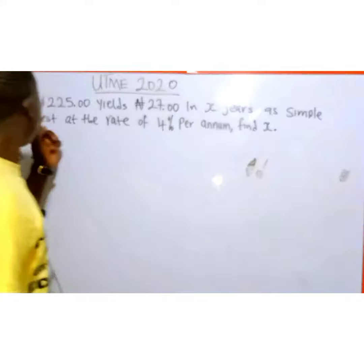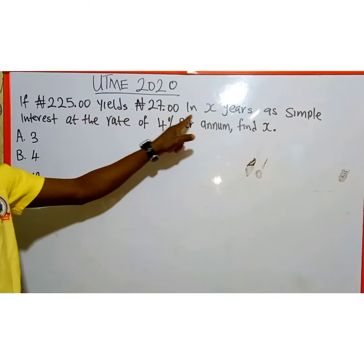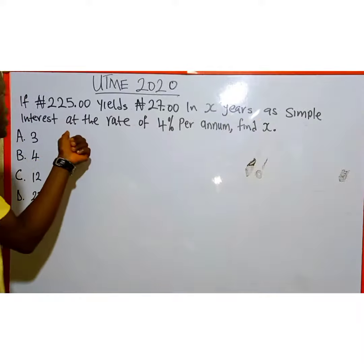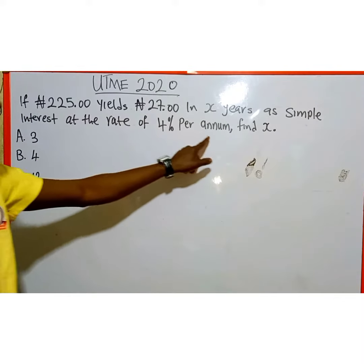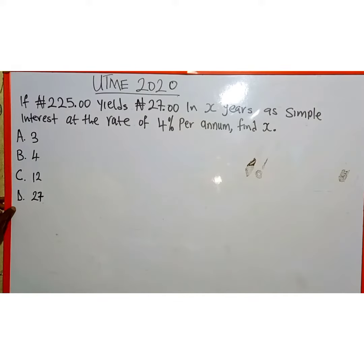The question reads: if 225 naira yields 27 naira in X years as simple interest at the rate of 4% per annum, find X. Here are the available options, option A to D.